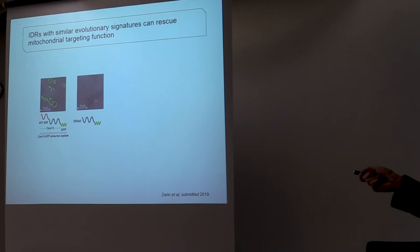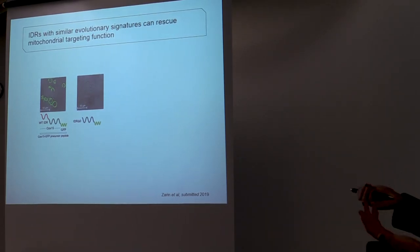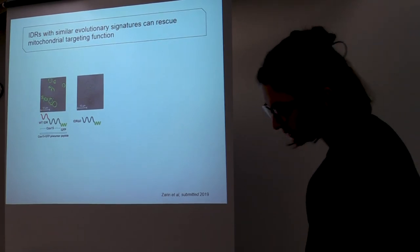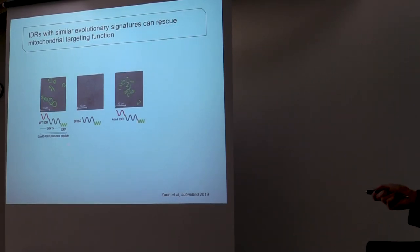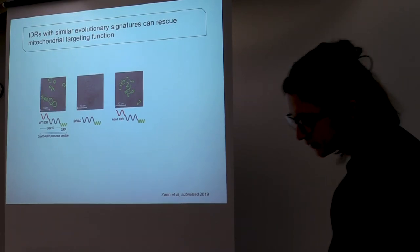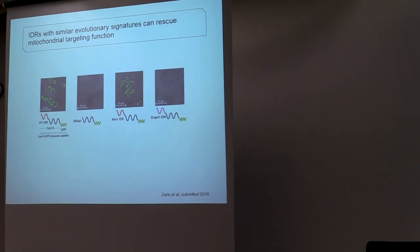Here, if we knock out the disordered region, we don't see any GFP signals, so the precursor peptide never made it to the mitochondria. However, if we replace the wild-type disordered region with a disordered region from the same cluster, so this is from ATM1, and this is actually an uncharacterized precursor peptide, we recover the mitochondrial localization of the protein. Whereas if we put in a disordered region from the neighboring cluster, again we see no mitochondrial localization.